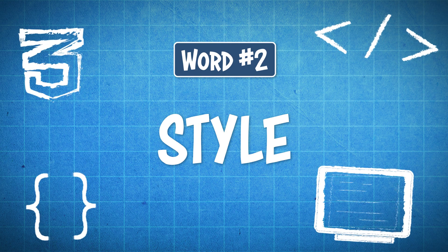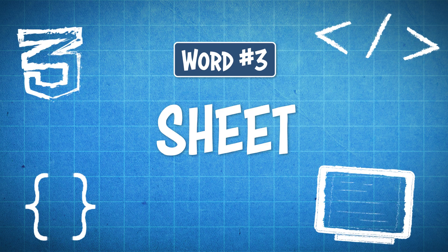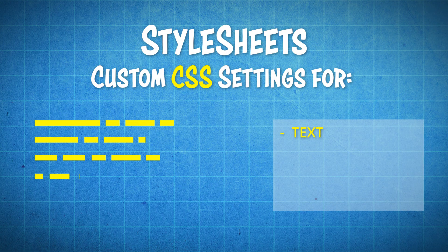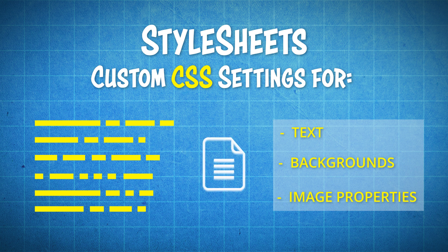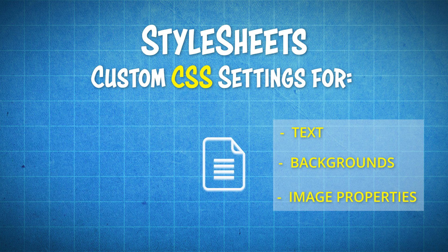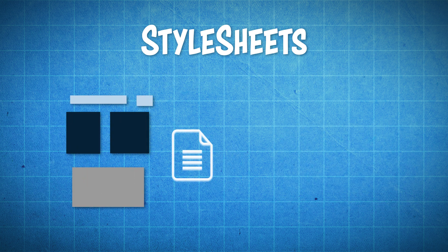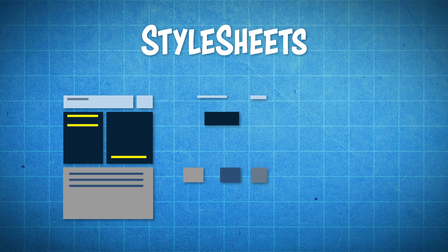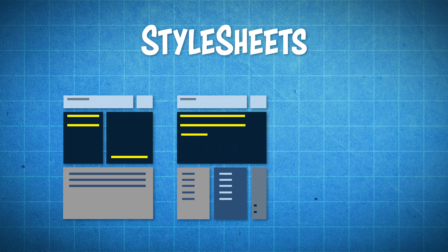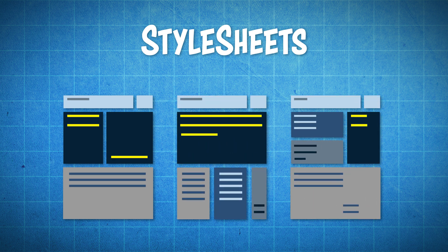So the next word is style, which makes perfect sense because it alters the style of your website. Let's move on to the third word, which is sheets. By this, I mean style sheets, which is basically like writing a bunch of custom CSS settings for things like text, backgrounds, image properties, etc., and saving it as one file, aka a sheet that you can apply to multiple web pages, all with different content and layouts, in order to achieve a cohesive style throughout your entire website.